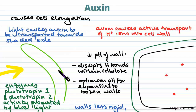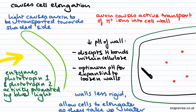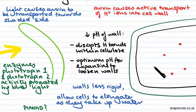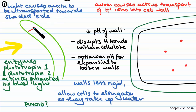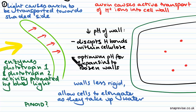Cell elongation is why things are able to bend towards stimuli. Here is pretty much a play-by-play: light causes auxin to be transported towards the shaded side of the plant. Once auxin is on the shaded side of the plant,